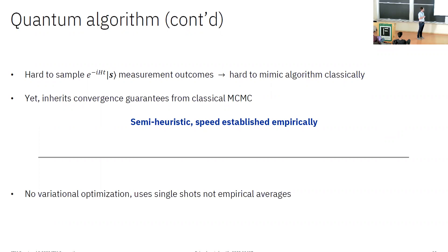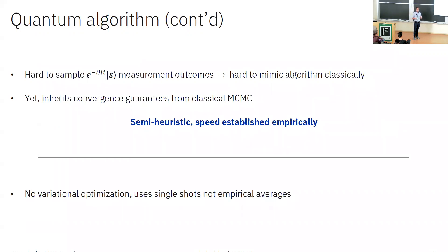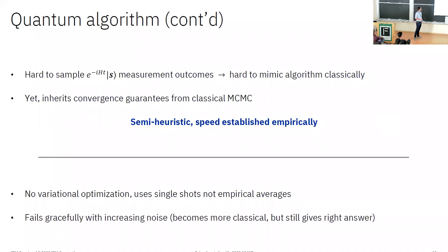As a quantum algorithm, this one is also a bit unusual. There's no variational optimization here, no adiabatic component, and perhaps most strangely, there is no expectation value to be estimated. We really directly use the quantum computer for what it does most naturally — generating complicated random transitions between n-bit strings. Because of the inherent stochastic nature of this algorithm, we find in our experiments that it's quite robust to noise, and it fails gracefully in the sense that the impact of experimental imperfections makes the algorithm look more and more classical, as opposed to driving you towards the wrong answer.